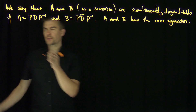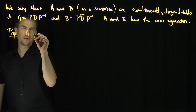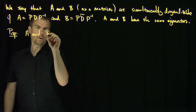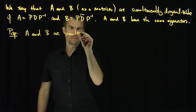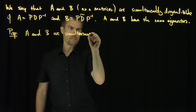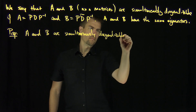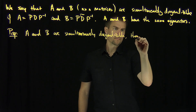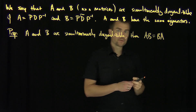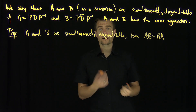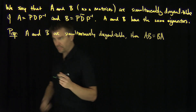Here's a proposition. If A and B are simultaneously diagonalizable, then A commutes with B. Remember that matrix multiplication doesn't commute in general, but for simultaneously diagonalizable matrices, it does. The proof of this is straightforward.